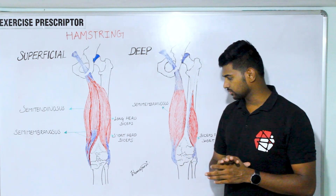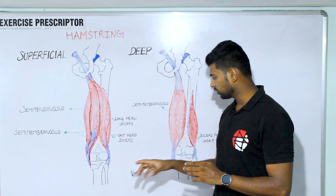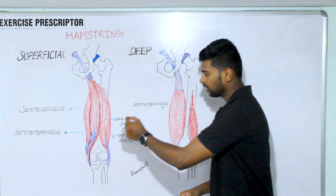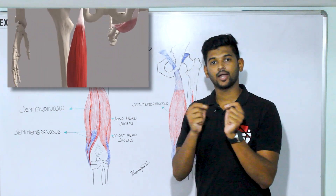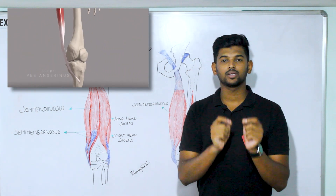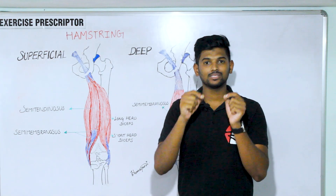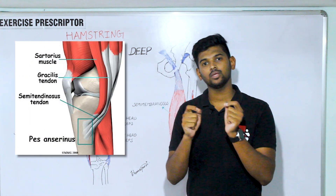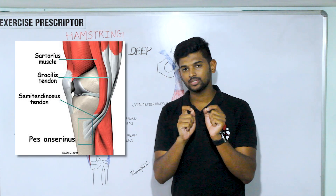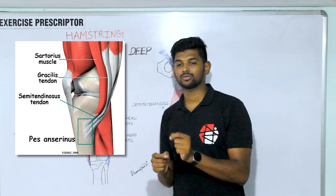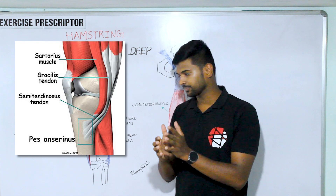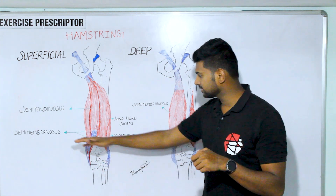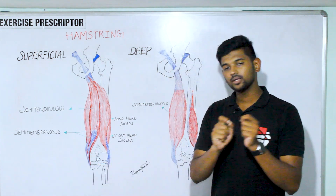For the distal attachments: biceps femoris — both short head and long head — attaches over the fibular head and lateral condyle of the tibia. Semitendinosus has a long tendon passing the knee anteriorly and attaching over the anteromedial aspect of the tibia. Two other muscles attach at the same place — gracilis and sartorius — all three attaching on the anteromedial aspect of the tibia; this region is called the pes anserinus. Semimembranosus does not cross the knee anteriorly; its distal tendon directly attaches to the medial aspect of the tibial condyle.